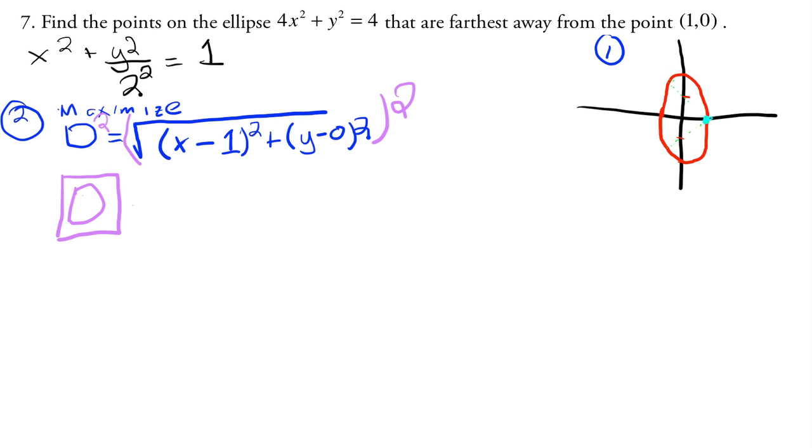So then what we get is that the distance squared, let's put the square on the outside, distance squared is equal to (x - 1)². Now let's expand that: x² minus 2x plus 1. And then plus y squared.